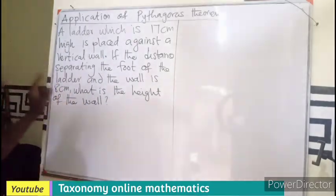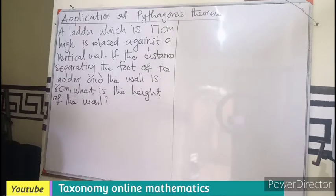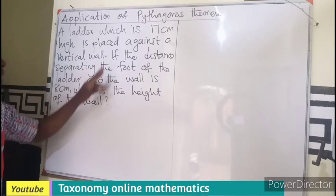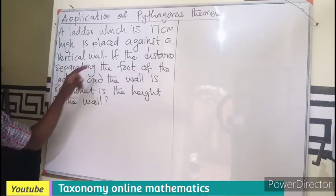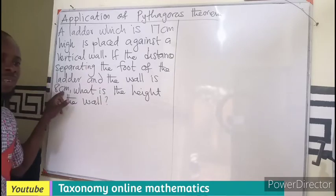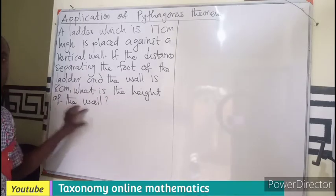So we are saying that a ladder which is 17 centimeters high is placed against a vertical wall. If the distance separating the foot of the ladder and the wall is 8 centimeters, what is the height of the wall?